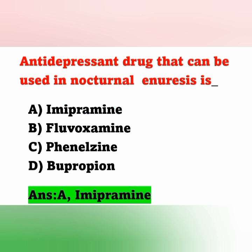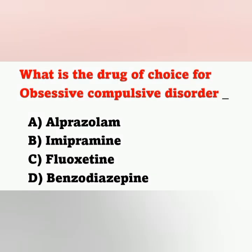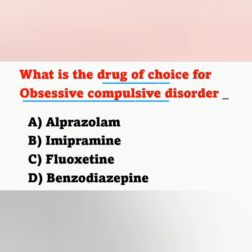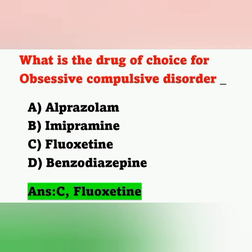The next question: What is the drug of choice for obsessive-compulsive disorder? Option A: alprazolam; Option B: imipramine; Option C: fluoxetine; Option D: benzodiazepine. The drug of choice for OCD — obsessive-compulsive disorder — is Option C: fluoxetine.